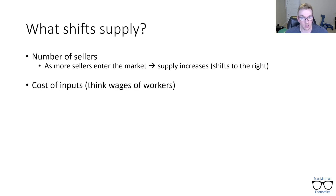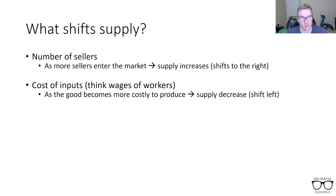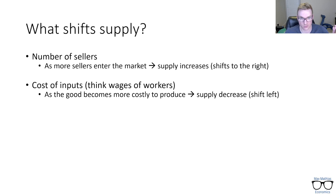Cost of inputs — think wages of workers, but also cost of machines and raw materials like steel if you're making cars. If a good becomes more costly to produce — if inputs become more expensive — supply decreases or shifts to the left. If I have to pay my workers more, it becomes more expensive to produce, so I make less of it. Supply shifts to the left. On the other hand, if the good becomes cheaper to produce, supply increases or shifts to the right.